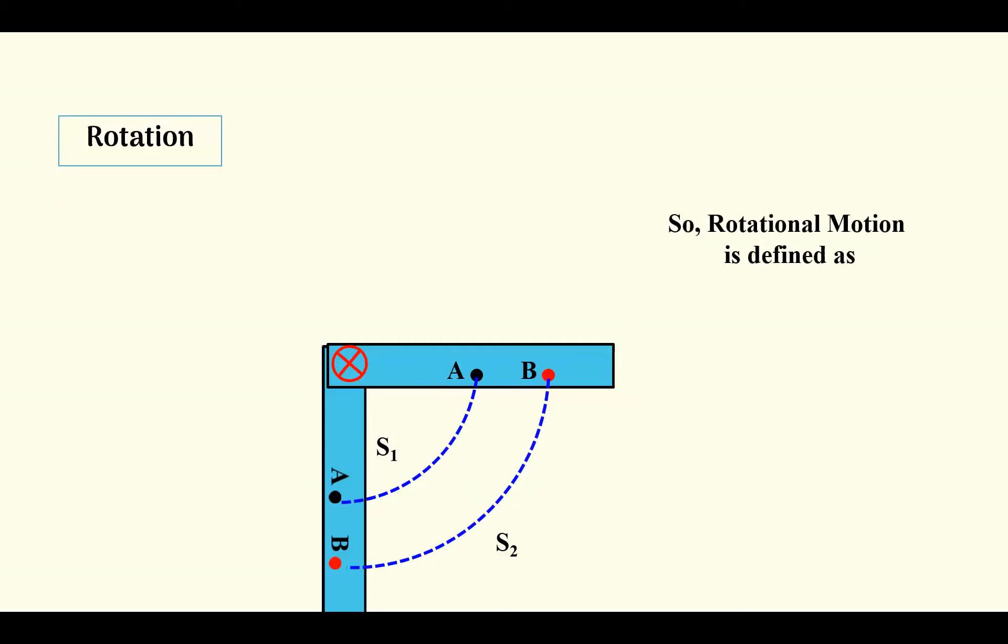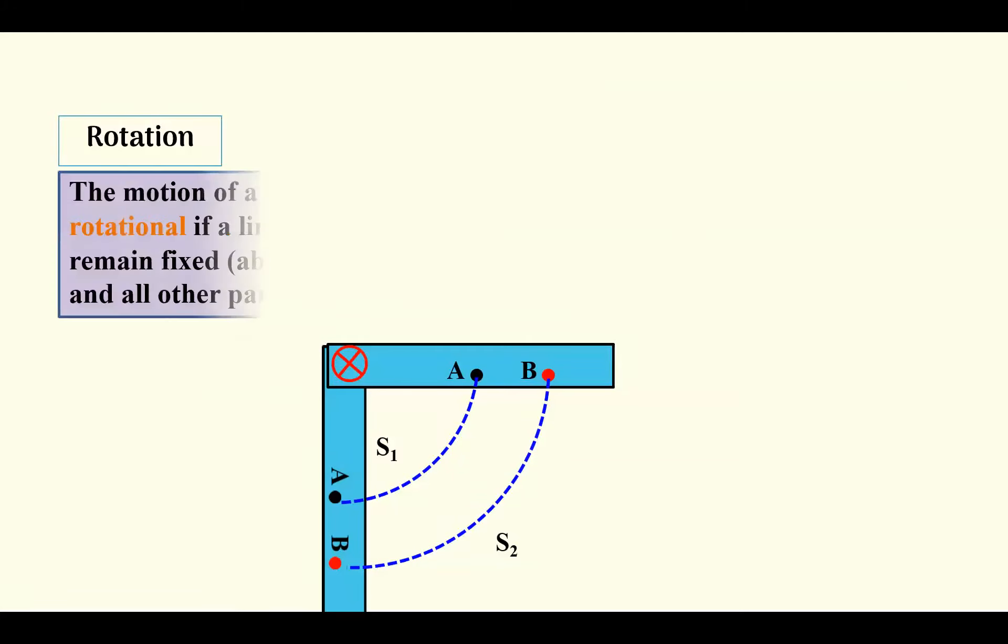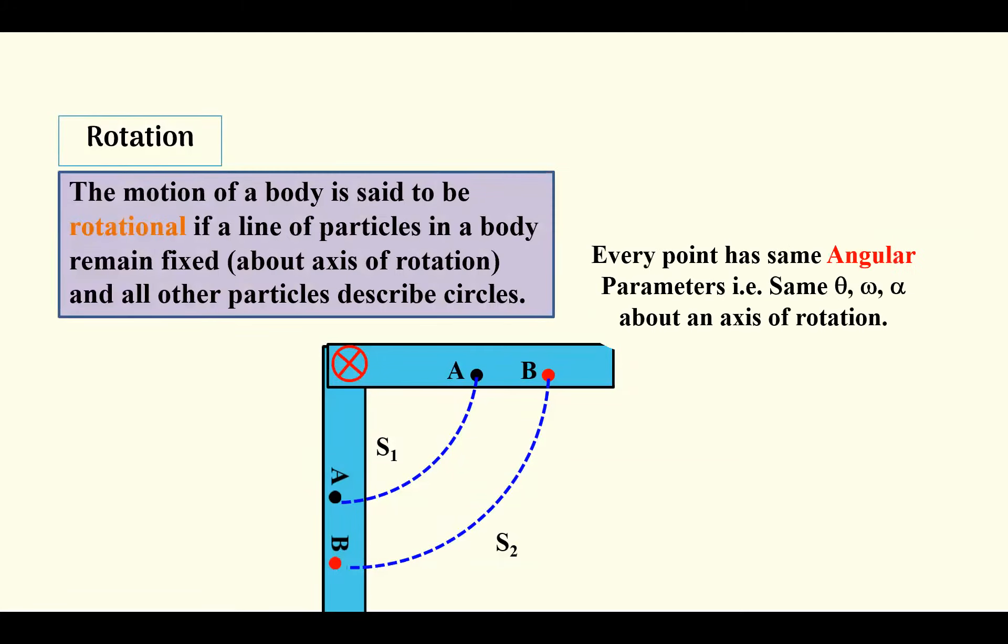So in this case, we can define rotational motion as a motion of a body is said to be rotational if the line of particles in a medium remain fixed, that is about a fixed rotational axis, and all the particles describe a circle. Every point has an angular parameter, that is it has got angular displacement, angular velocity, angular acceleration, and in this case all of them are about a given axis.